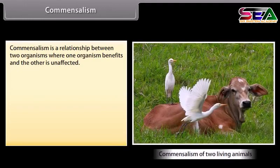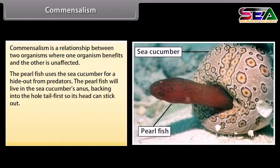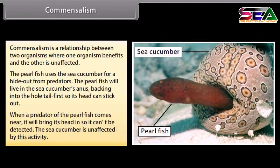Commensalism is a relationship between two organisms where one organism benefits and the other is unaffected. For example, the pearlfish uses the sea cucumber as a hideout from predators. The pearlfish lives in the sea cucumber's anus, backing in tail first so its head can stick out. When a predator comes near, it brings its head in so it cannot be detected. The sea cucumber is unaffected by this activity.